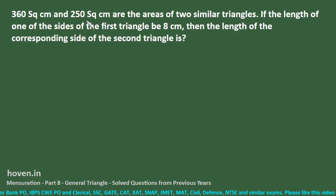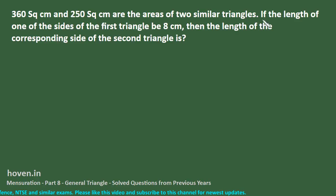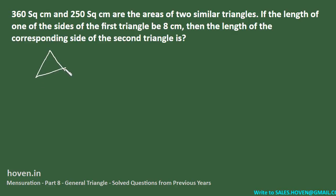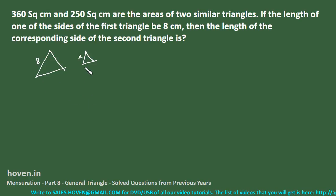360 square centimeters and 250 square centimeters are the areas of two similar triangles. By reading this, I can understand this will be on the area theorem. If the length of one side of the first triangle is 8, then the length of the corresponding side of the second triangle is what? We will apply the area theorem directly. Let the unknown side be x.